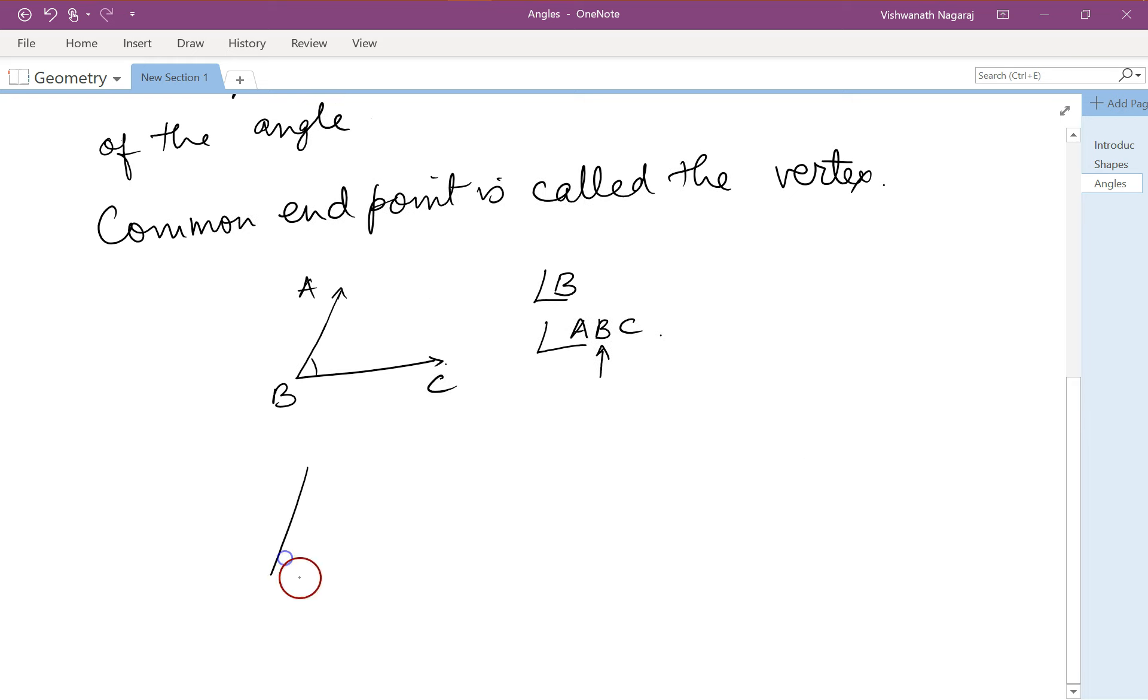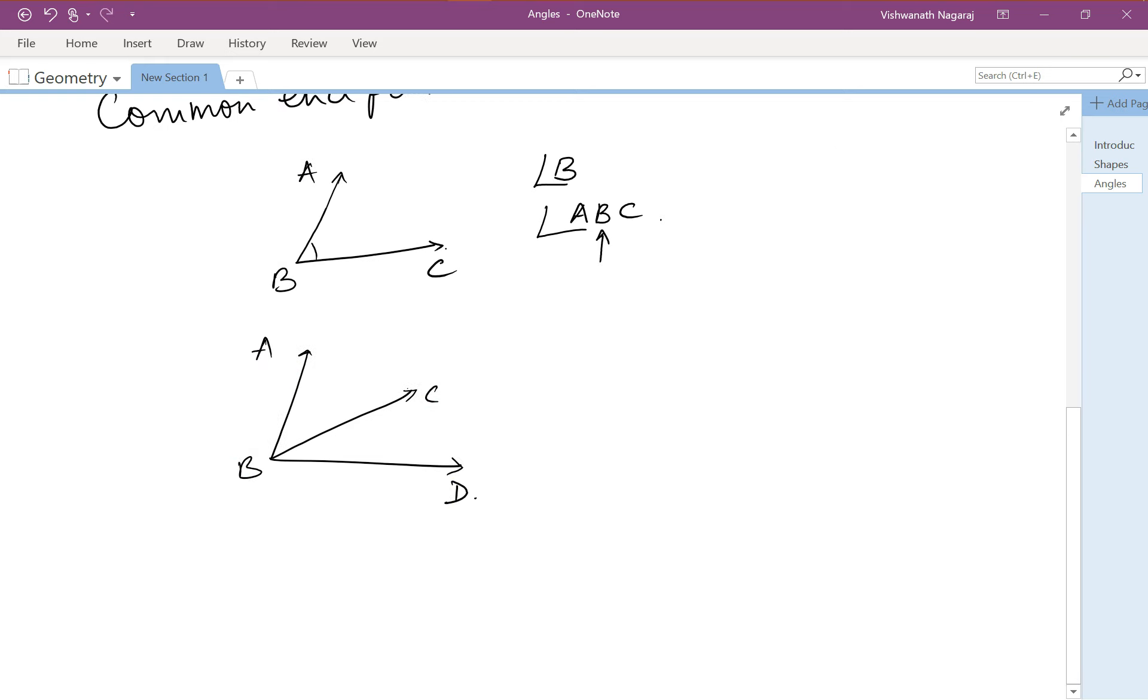Now it might happen that there are more than two rays from a common endpoint, ABCD. Now in such a scenario, we need to be very careful when we are naming the angles, because now here you have four angles: 1, 2, 3, and 4.